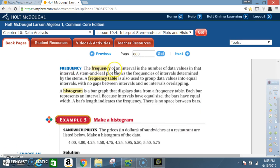Frequency. The frequency of an interval is the number of data values in the interval. A stem and leaf plot shows the frequencies of intervals determined by the stems. A frequency table is also used to group data values into equal intervals with no gaps between intervals and no intervals overlapping. A histogram is a bar graph that displays data from a frequency table. Each bar represents an interval. Because intervals have equal size, the bars have equal width. A bar's length indicates the frequency. There are no spaces between bars.